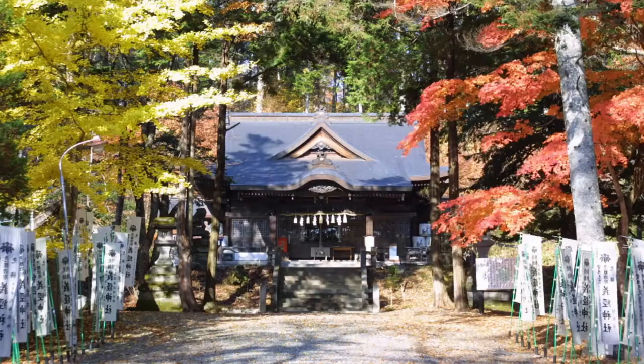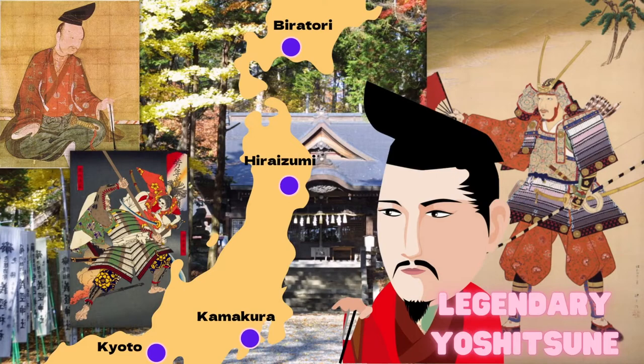By the way, war hero Minamoto no Yoshitsune became a legend. This is because many people could not accept his death. According to legend, he secretly fled to Ezo and became the leader of the Ainu people. Ezo is present-day Hokkaido. There is a shrine to Yoshitsune in the town of Biratori. Furthermore, there is even a theory that Yoshitsune went to Mongolia and became Genghis Khan — well, it is a little hard to believe.